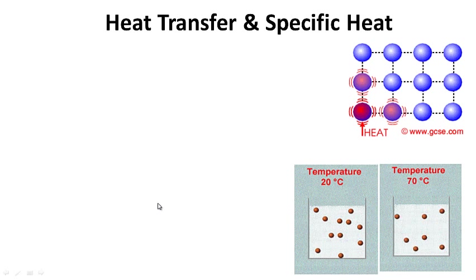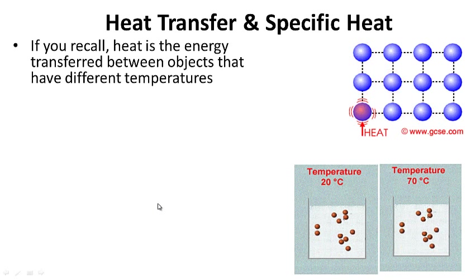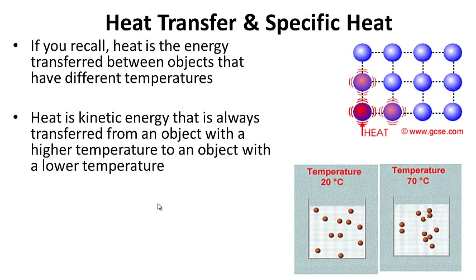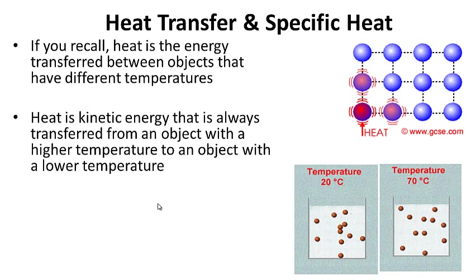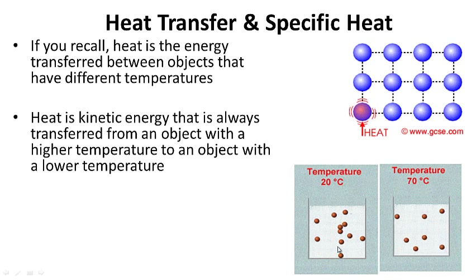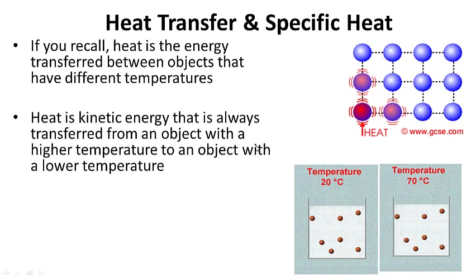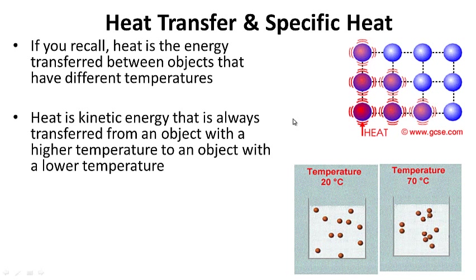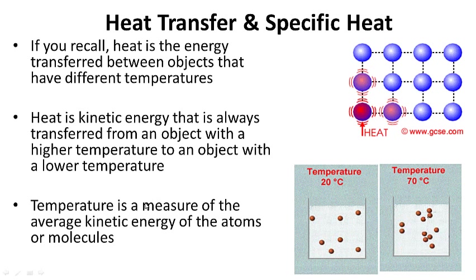So, heat transfer and specific heat. If you recall, heat is the energy that is transferred between objects that have different temperatures. Heat is kinetic energy that is always transferred from an object with a higher temperature to an object with a lower temperature. When you're measuring temperature, what you're really measuring is how fast the atoms or molecules are vibrating or moving. Temperature is a measure of the average kinetic energy of the atoms or molecules.